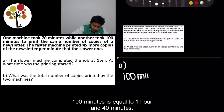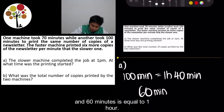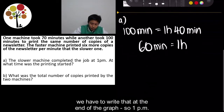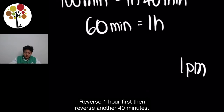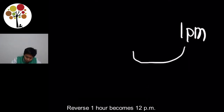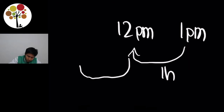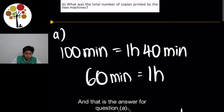Question A: The slower machine completed the job at 1pm. At what time was the printing started? 100 minutes equals 1 hour and 40 minutes, since 60 minutes equals 1 hour. Since the job was completed at 1pm, we write that at the end. Reversing 1 hour from 1pm gives 12pm. Then reversing 40 minutes gives 11:20am. That is the answer for Question A.